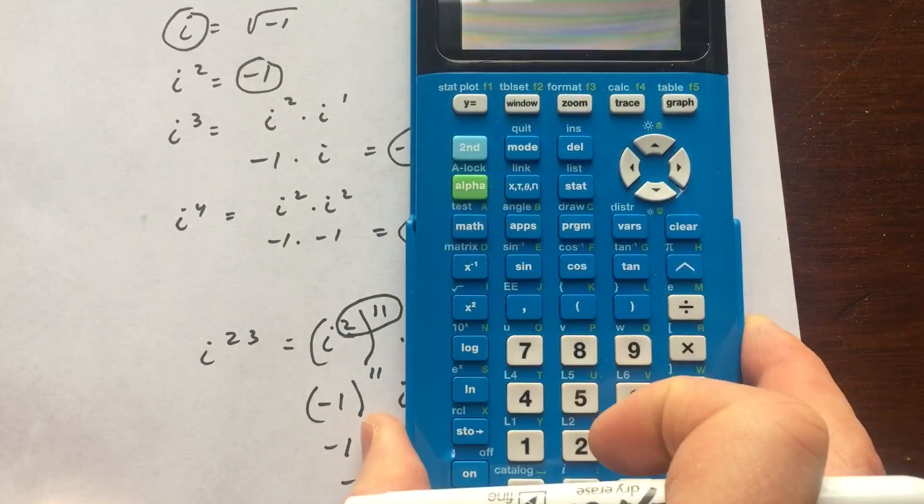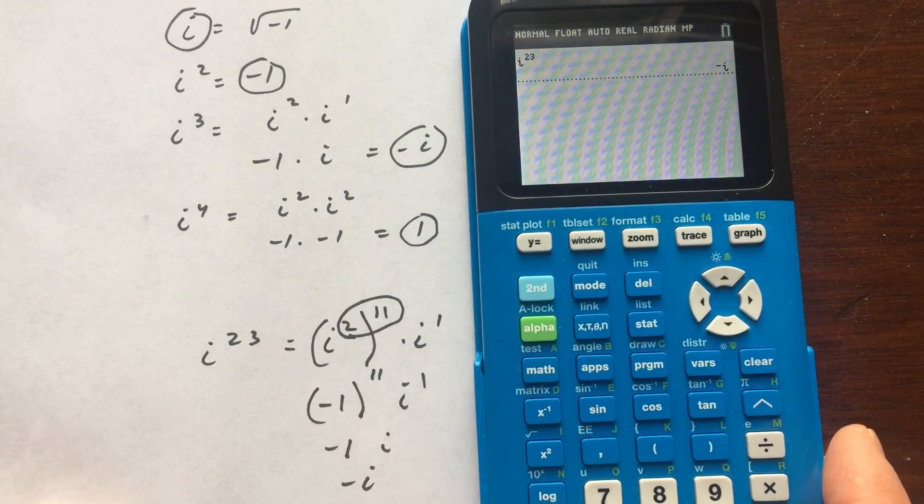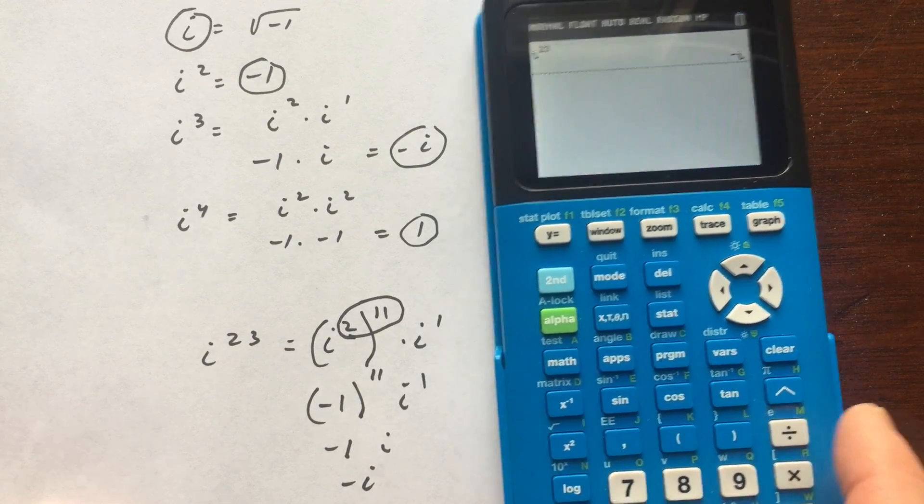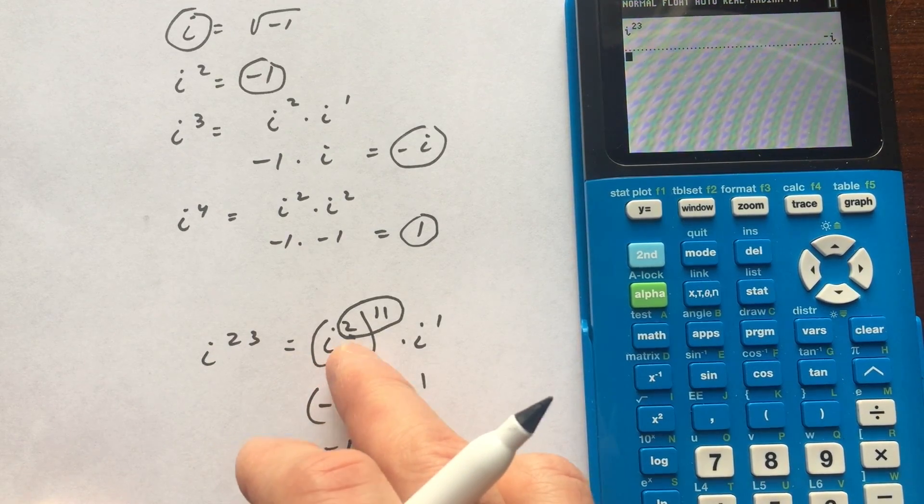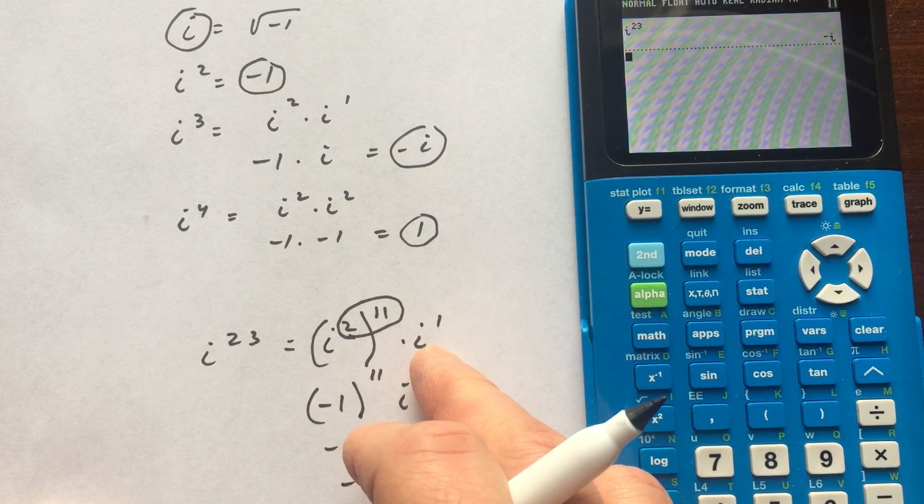So again, just go ahead and use that 2nd key. Use the i, which is right above the decimal point. And you'll be able to verify what these i values are to higher powers. But it's good to know how to do it by hand, just like I showed you here. By just making it multiples of 2. And then whatever you have left over, you can have here.